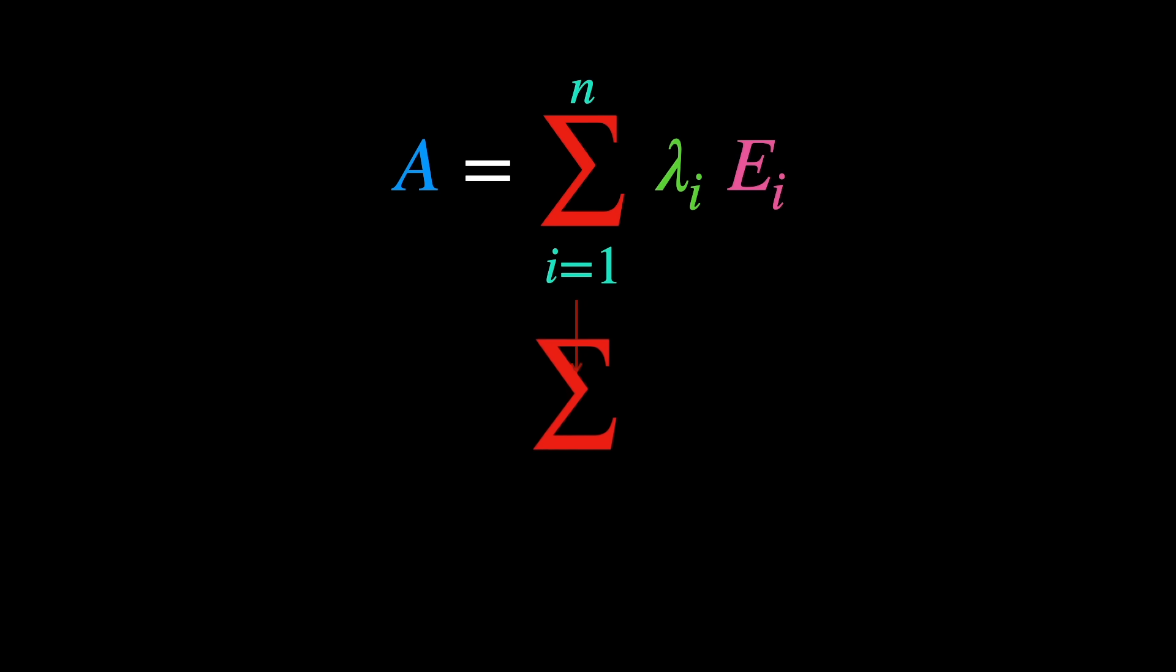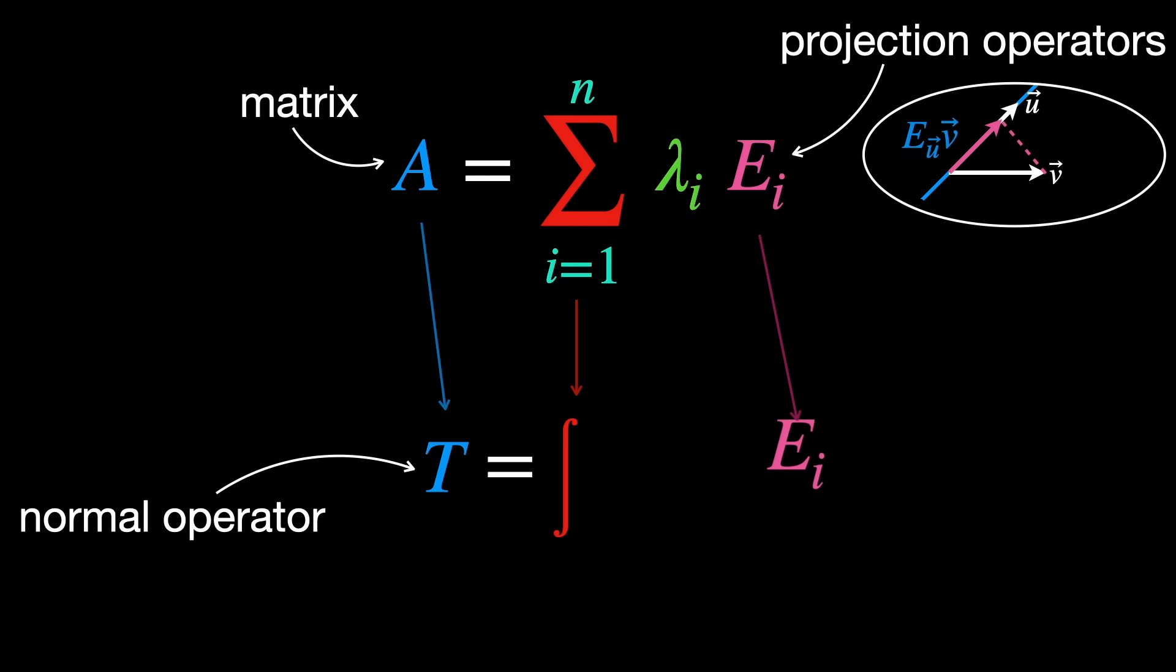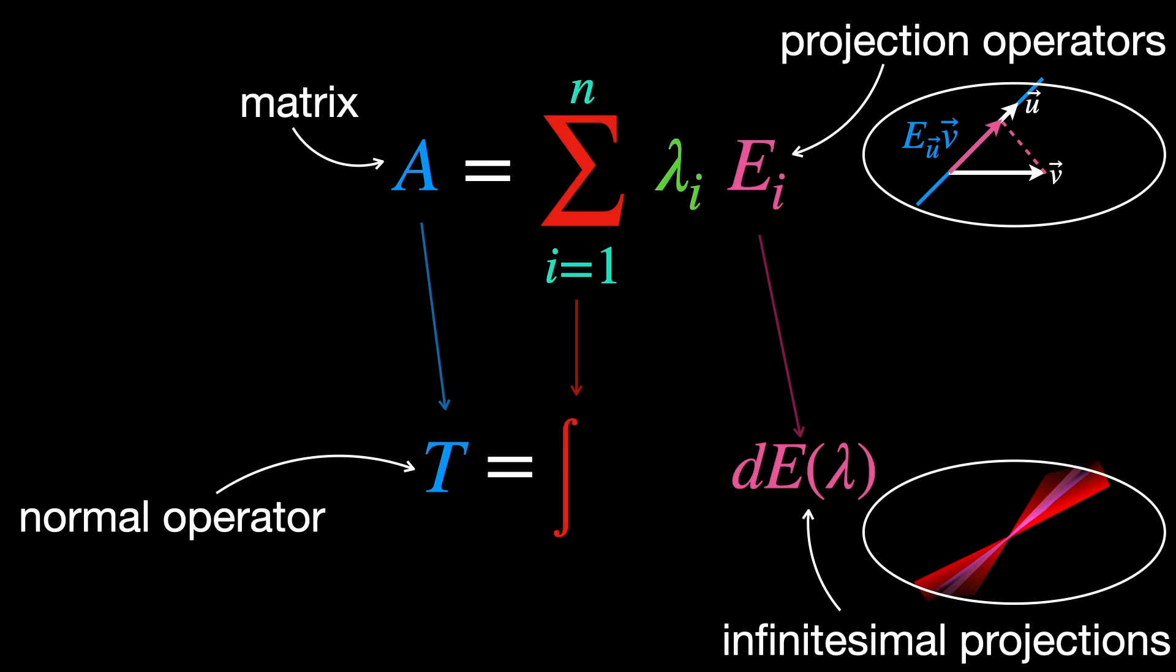So we generalize by replacing the sum with the integral, by replacing the matrix A with a normal operator T acting on a Hilbert space, by replacing the discrete set of projection operators E_i with infinitesimal projections dE of lambda from a resolution of identity, the discrete set of eigenvalues lambda_i with a continuous spectrum lambda in sigma of T.